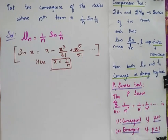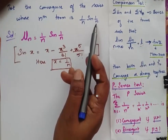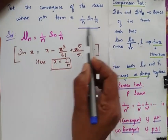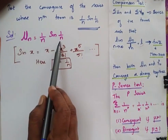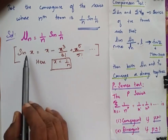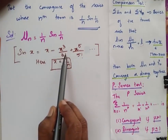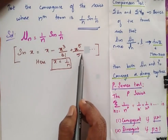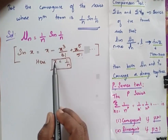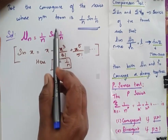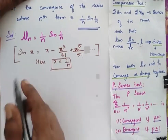Test the convergence of the series whose nth term is (1/n)sin(1/n). Since this is the nth term, we consider u_n = (1/n)sin(1/n). We know that sin x = x - x³/3! + x⁵/5! - ... So when x = 1/n, we replace sin(1/n) by this expression in u_n.